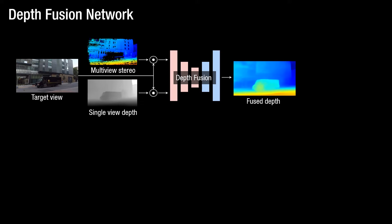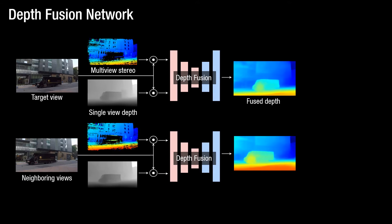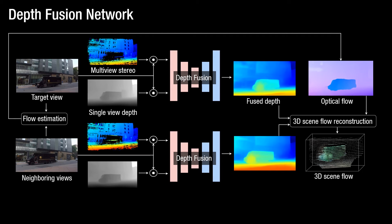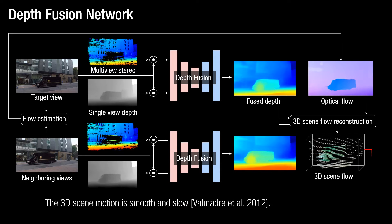We minimize the reprojection of the estimated depth as a special regularization. We also apply temporal regularization in three steps: first, we estimate the fused depth map from neighboring views; second, we estimate the optical flow between the target and neighboring views; finally, we reconstruct the 3D scene flow by combining the depth maps and optical flow. Here, we minimize the scene flow, assuming that the 3D scene motion is smooth and slow.